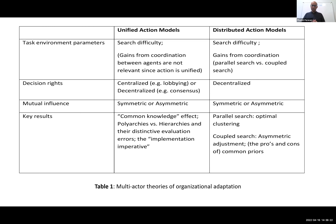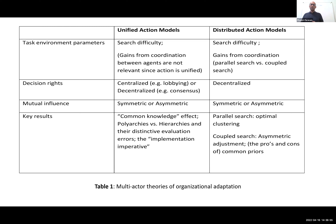The other is a distributed action model, where every actor takes an action that directly affects the task environment — more like the Kocak, Leventhal, and Puranam paper, a team model. In unified action models, search difficulty is the main thing to vary and study. Coordination doesn't apply because there's a single action. The distributed action models can be used to study both search difficulty and coordination — if coordination is unimportant you get parallel search, otherwise coupled search.